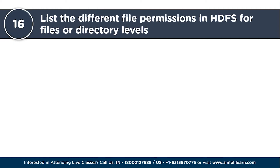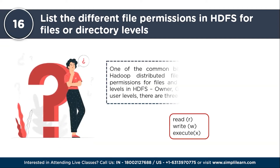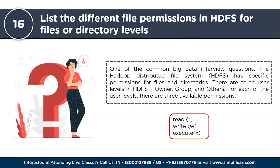The next question: list the different file permissions in HDFS for files or directory levels. In HDFS, distinct permissions are assigned to files and directories for different user levels — owner, group, and others — each with three distinct permissions. For files: R enables reading file content, W empowers writing data into a file, and X (execute) is present but does not grant execution rights for HDFS files. For directories: R facilitates listing the contents of a directory, W allows creation or deletion of a directory, and X (execute) is associated with accessing child directories within the parent directory.